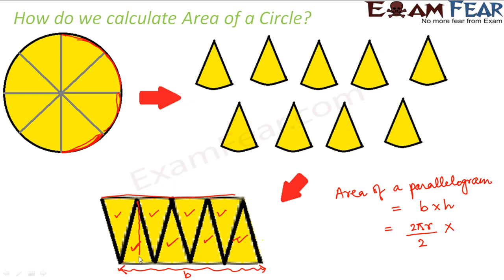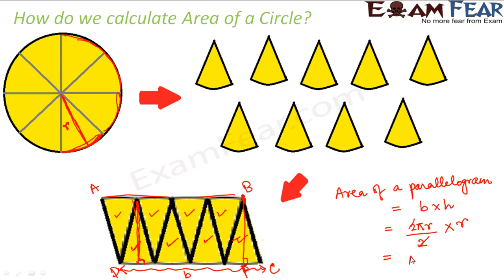Now what is the height of this parallelogram? The height is a line drawn perpendicular to the base from the opposite vertex — let's call it BF. Looking at any one sector in the circle, the line BF corresponds to the line from the center to the edge of the sector, which is nothing but the radius. So the height of the parallelogram is the radius r.